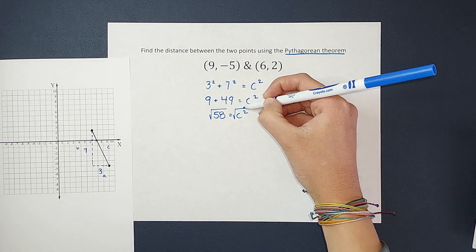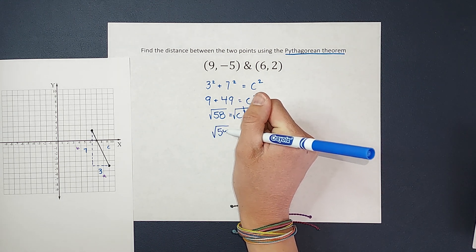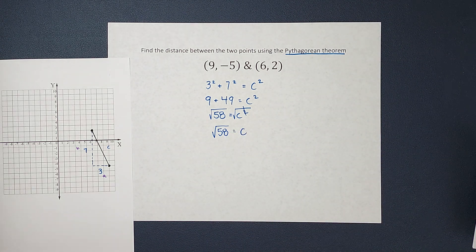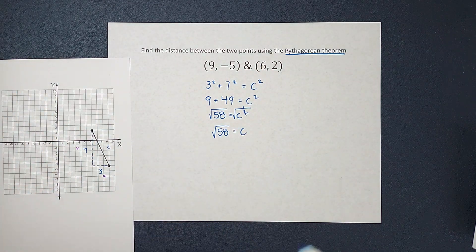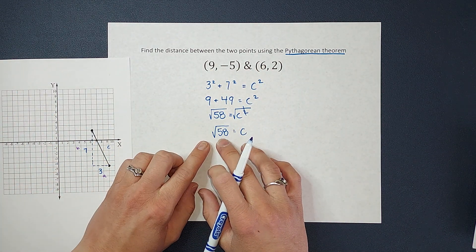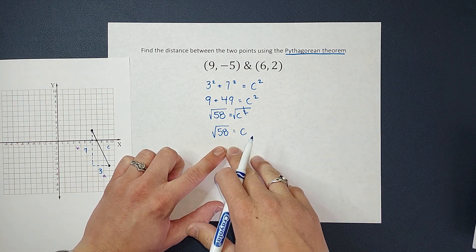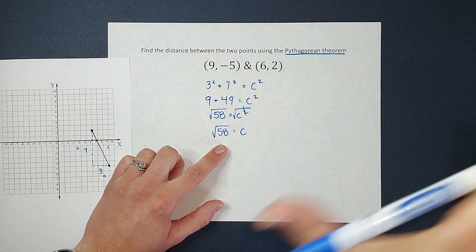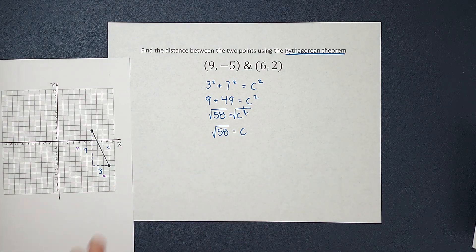When I do that, the square root and the squared cancel, and I end up with the square root of 58 equals c. From here, if you plug in the square root of 58 into your calculator, you're going to get a nasty decimal. So we typically like to see if we can simplify the square root. This one does not simplify any further — square root of 58 is as good as it's going to get. So that is my answer.